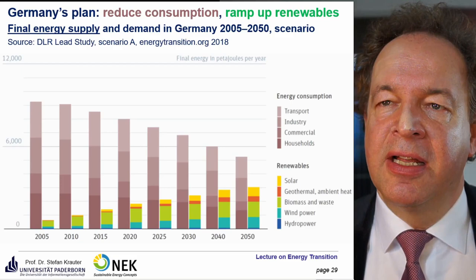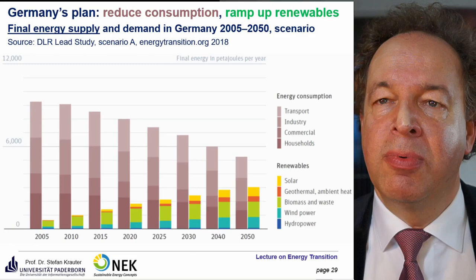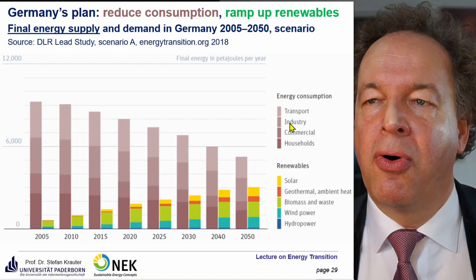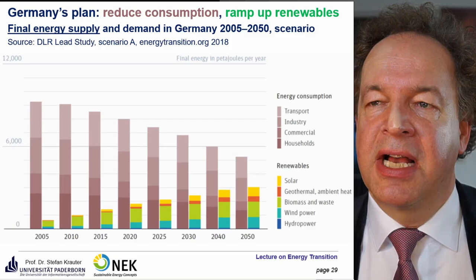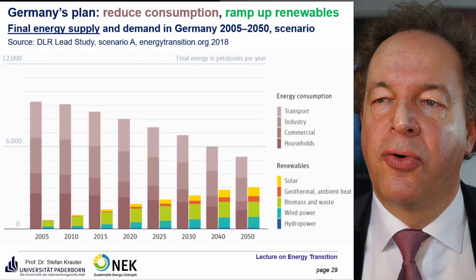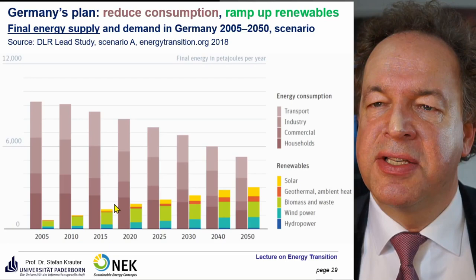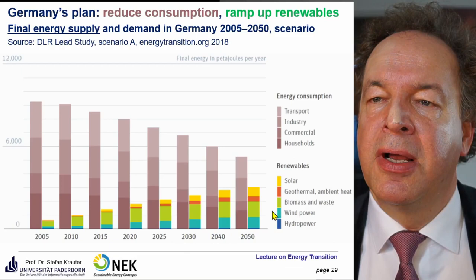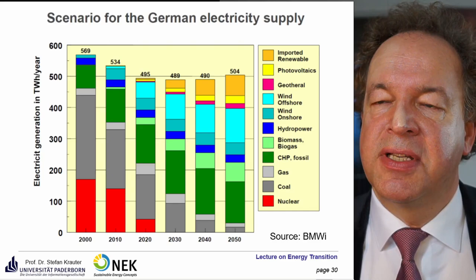Germany's plan is to reduce consumption and ramp up renewable share. Final energy demand will decrease because more efficient electric cars and heat pumps will replace fossil fuel technologies. The renewables share — biomass, waste, wind, and solar — will ramp up accordingly. A scenario by the Ministry of Economy and Energy shows a steep decrease in conventional energy, nuclear phase-out in 2022, coal phase-out, and substitution by renewables with reduced consumption.